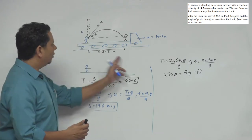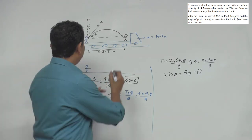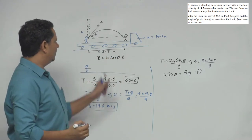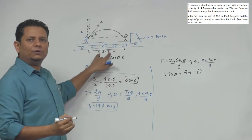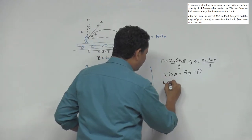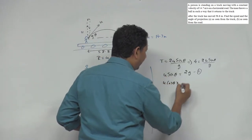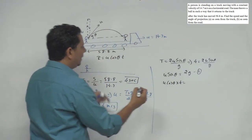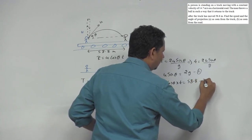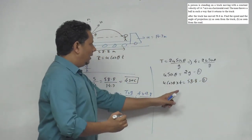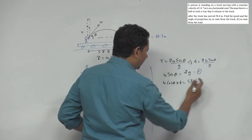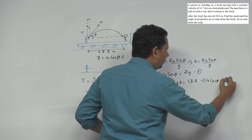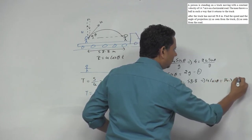Now looking at the horizontal distance, the range equals u cos theta multiplied by the total time taken. So 58.8 equals u cos theta multiplied by 4. This gives u cos theta equal to 14.7. This is equation number 2.